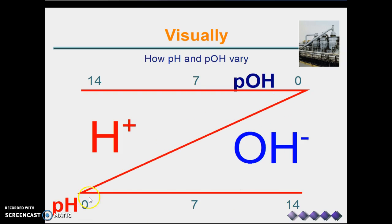Similarly, the pOH goes from 0 to 14 right to left because as the hydroxide concentration gets smaller, the pOH gets larger.